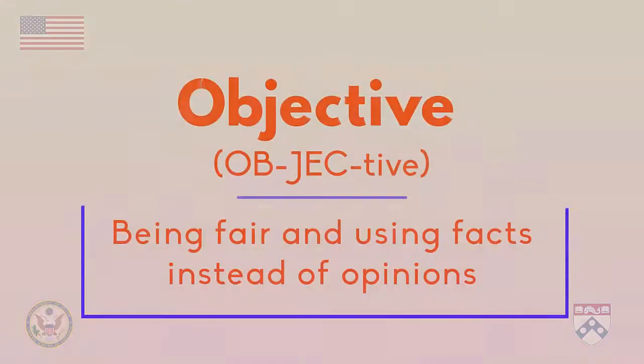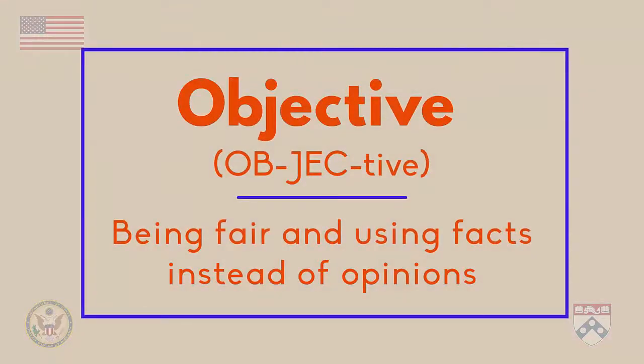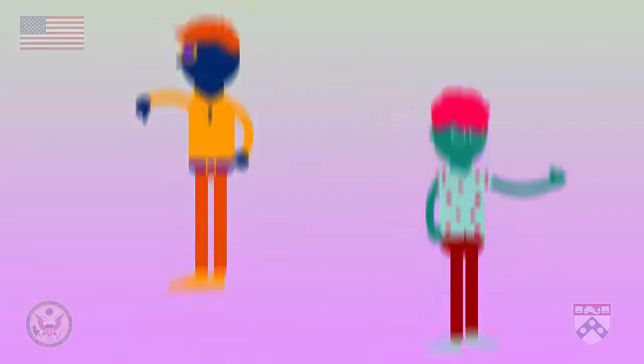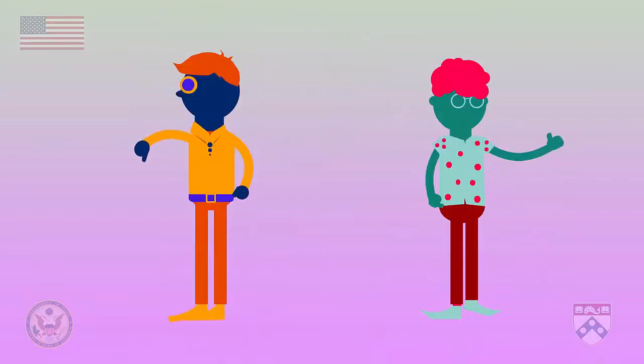Being objective means being fair and based on facts instead of opinions. In order to be objective, a news story should show more than one point of view. For example, it should show people who agree with a topic and people who disagree with it. Otherwise, we might end up with a one-sided story.